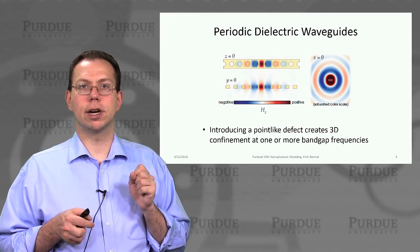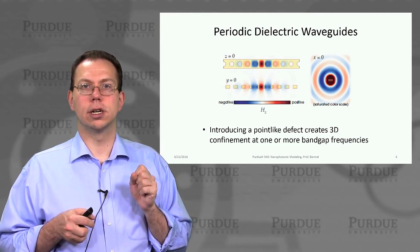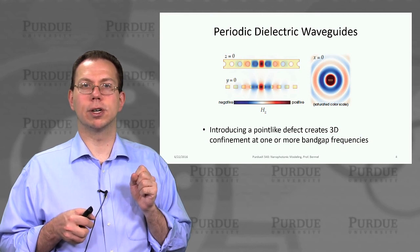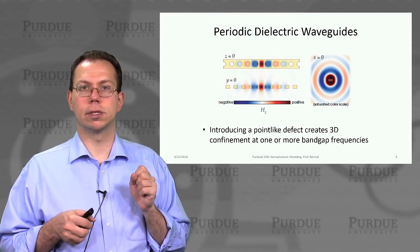In the next lecture, we'll talk about another type of structure which has a similar hybrid approach called the 2D photonic crystal slab.